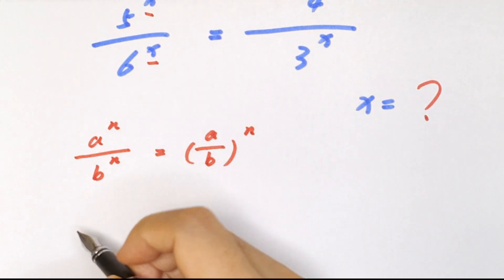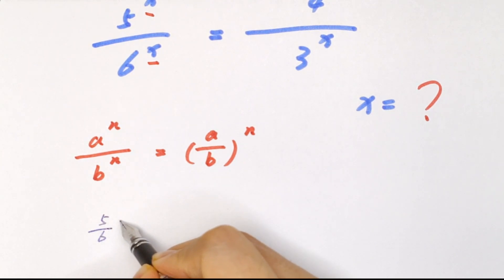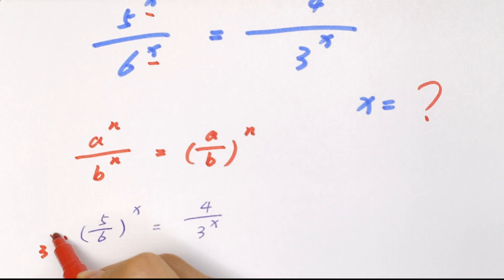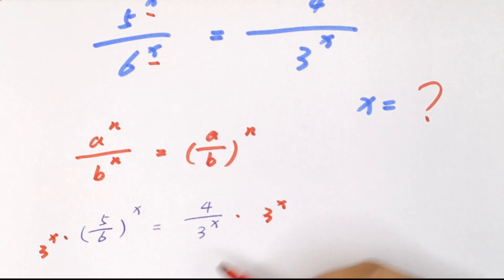So to be 5 over 6 bracket to the power of x equals 4 over 3 to the power of x. Now we times 3 to the power of x in both sides, and this will cancel with this.